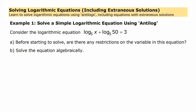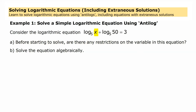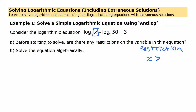We're going to start with a fairly straightforward equation: log base 5 of x plus log base 5 of 50 equals 3. Before we start to solve, when you're working with logarithmic equations, it's important to recognize that the expression with the variable — log base 5 of x — has restrictions. There are non-permissible values. Essentially the logarithm of something has to be a positive number; you can't take the logarithm of a negative and you can't take the logarithm of zero. So our restriction is that x has to be bigger than zero.